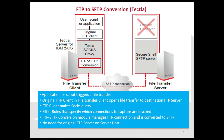The following steps happen during the FTP to SFTP conversion. An application, script, or user triggers a file transfer. The original FTP client starts opening a file transfer connection to the original destination FTP server. The FTP client makes a SOX query, and the SOX setting in the FTP client is set to point to the local host Tech Tier SOX proxy instead of a real firewall. The filter rules specifying which connections to capture are defined in the SOX proxy configuration.